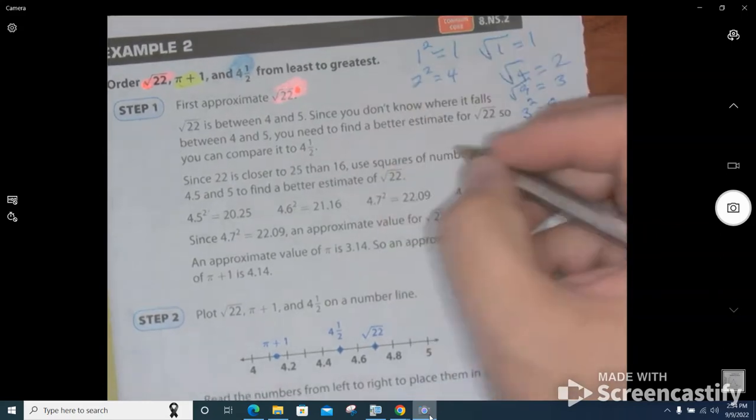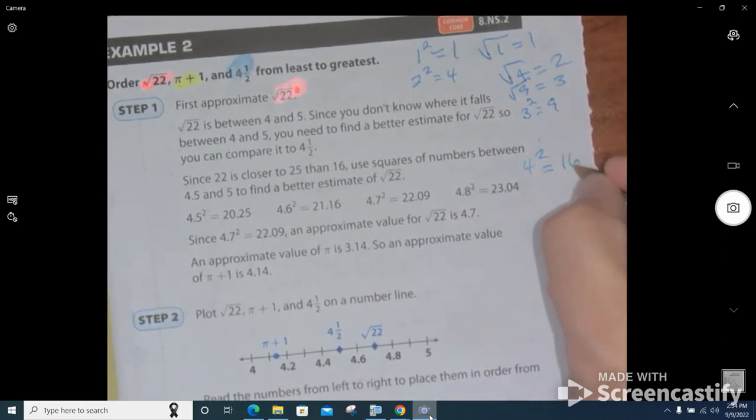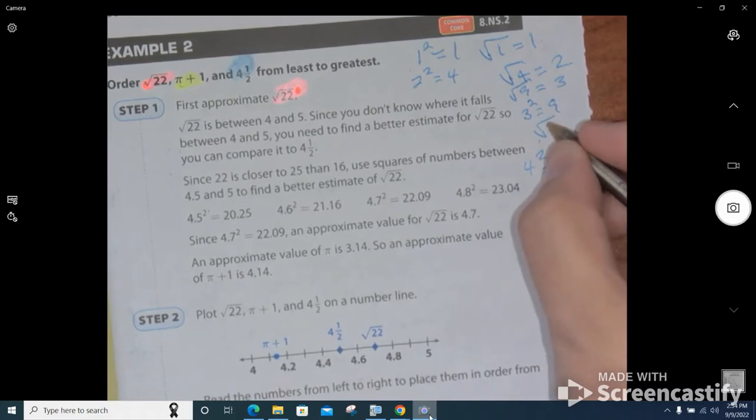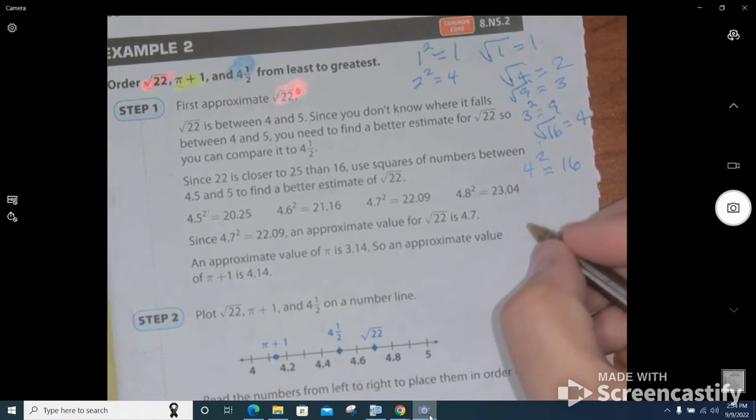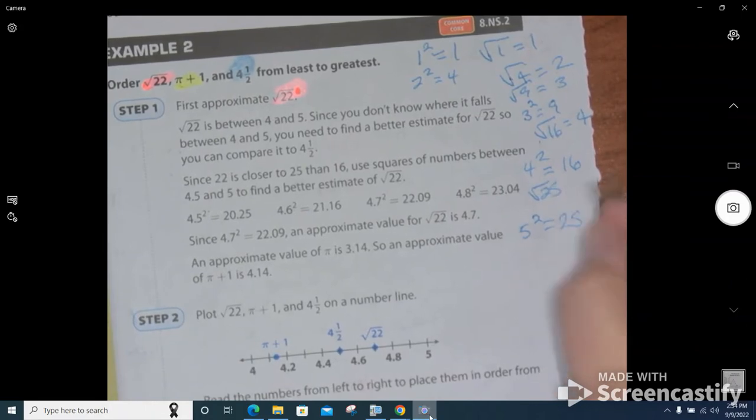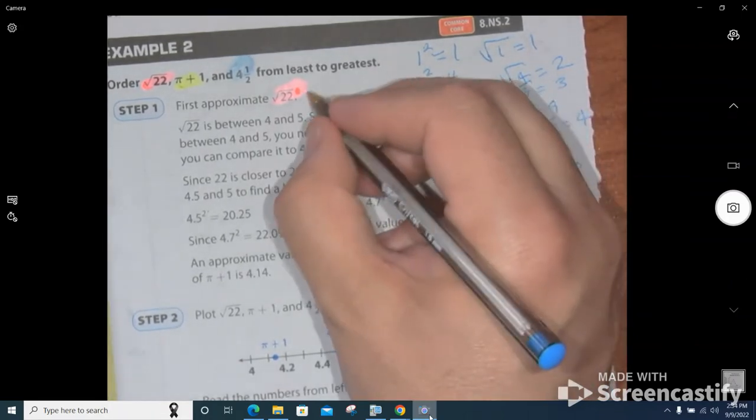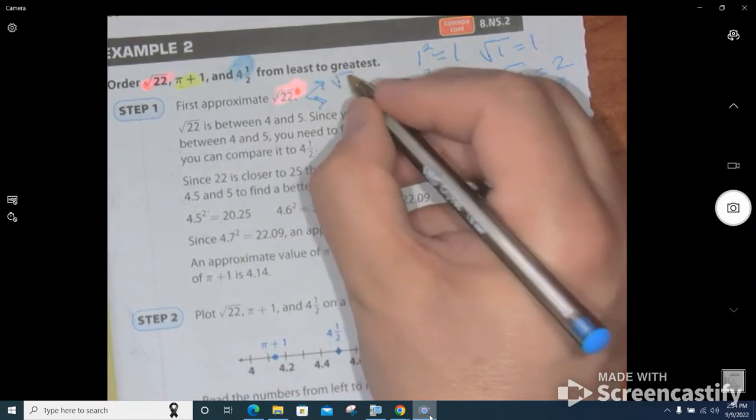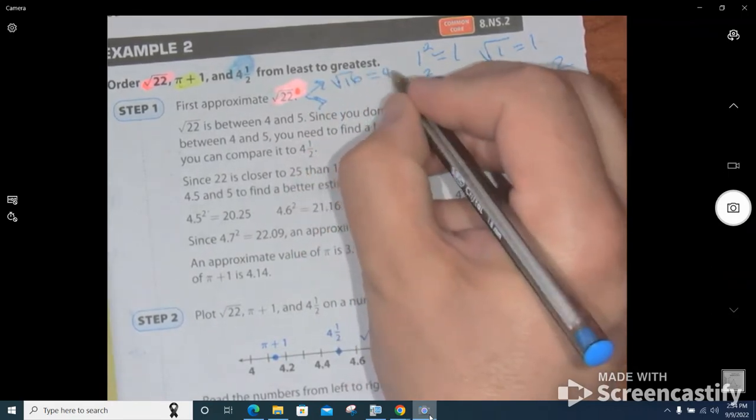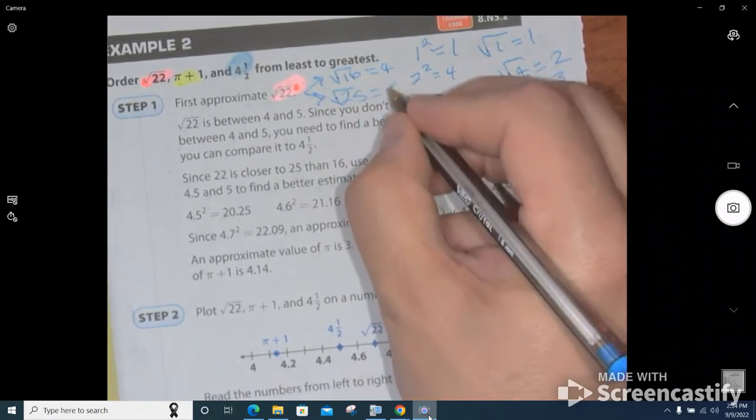4² equals 16, so that means the square root of 16 equals 4. And then 5² equals 25, which means the square root of 25 is equal to 5. So the square root of 22 lives between the square root of 16, which is equal to 4, and the square root of 25, which is equal to 5.